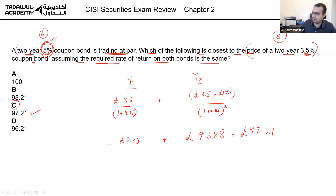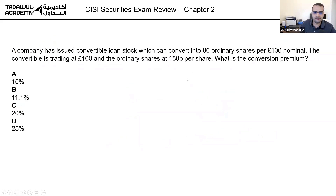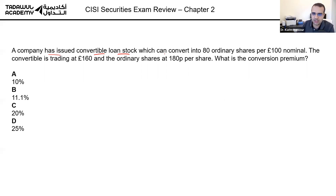Most of you got it right. Moving on: a company has issued convertible loan stock which can convert into 80 ordinary shares per 100 nominal.